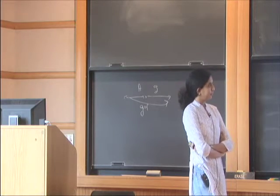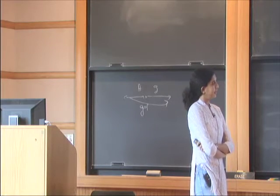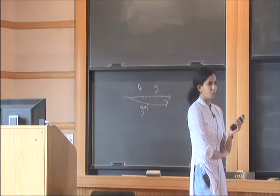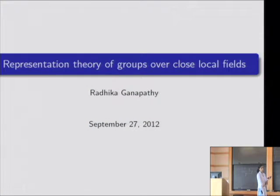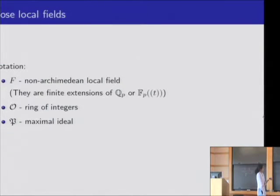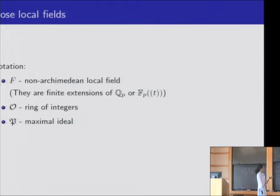I will start off by briefly reviewing some important results and then move on to the problem I am currently thinking about. We will fix some notation: F is a non-Archimedean local field. These are finite extensions of Q_p or the field of Laurent series in one variable.